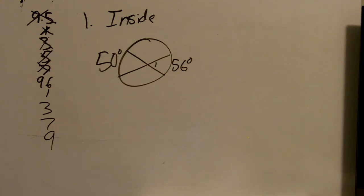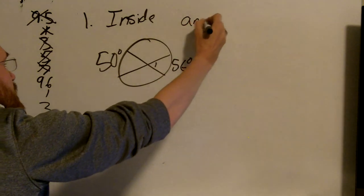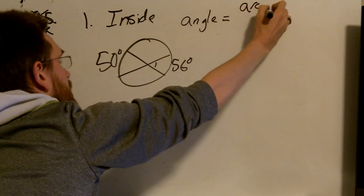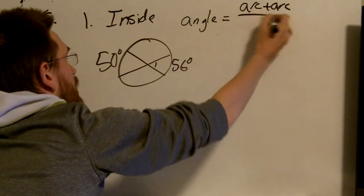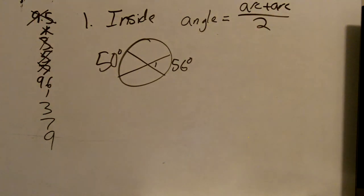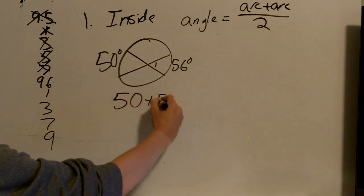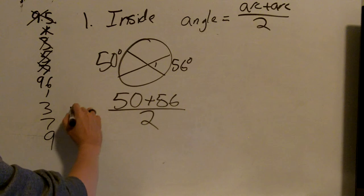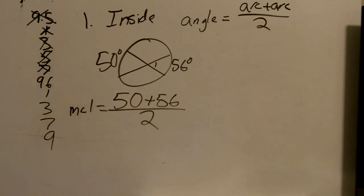So at this point, when it's inside, I say angle equals arc plus arc over 2. So 50 plus 56 divided by 2 equals the measure of angle 1.